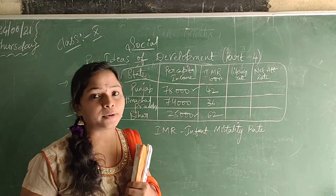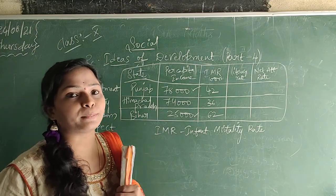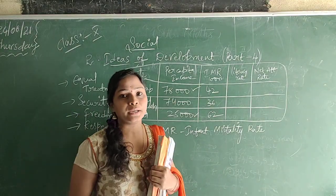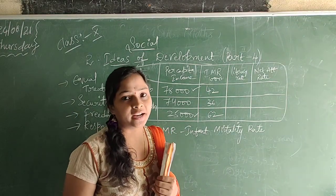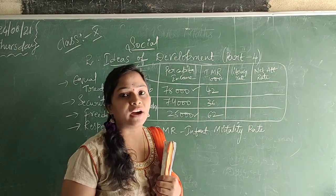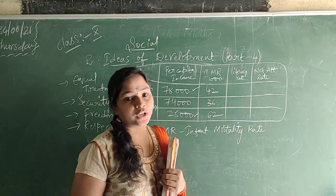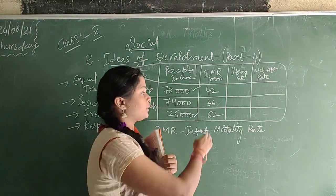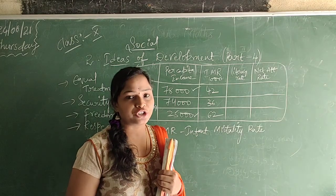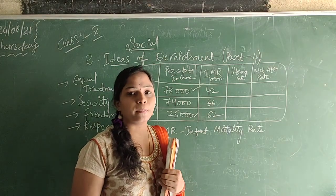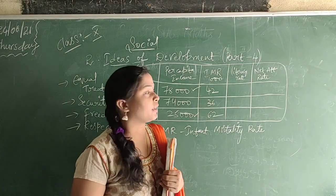Infant mortality rate refers to babies dying at a young age — that is what infants means. Like, without proper nutrition, due to lack of nutrition, so many children are dying in this way.